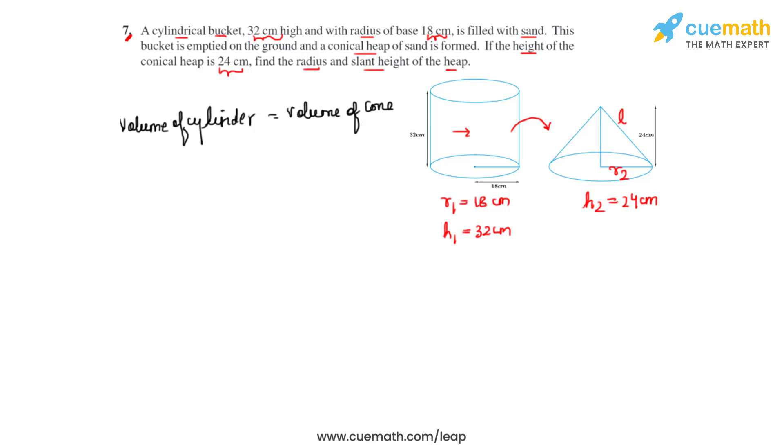So let's substitute the formulas in here in the given expression. So we will get the volume of the cylindrical bucket as π r1² times h1, and that equals the volume of the conical heap which will be 1/3 π times r2² h2.